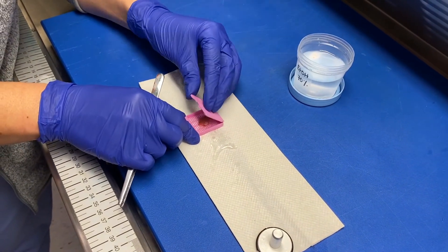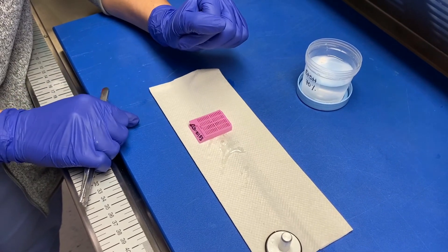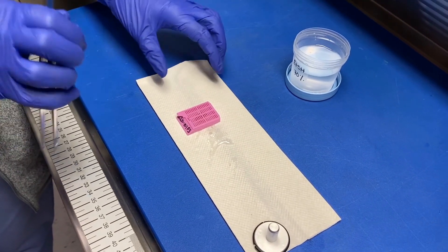Once all is complete, close your cassette and put the cassette in formalin fixative as you would any other tissue in a cassette.